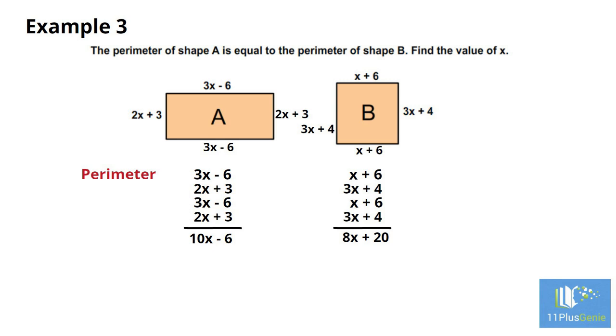The perimeter of A equals the perimeter of B. 10x minus 6 equals 8x plus 20. Add 6 on both sides to get 10x equals 8x plus 26. Subtract 8x from both sides to get 2x equals 26. Divide both sides by 2 to get the value of x. x equals 13.